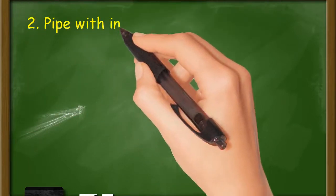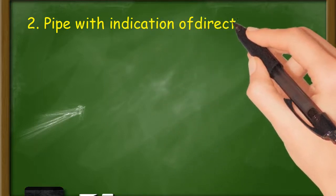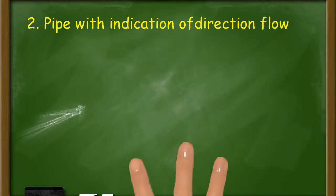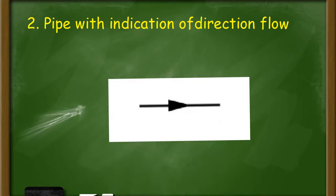Number 2: Pipe with indication of direction flow. The arrow on the line is indication of fluid flow.